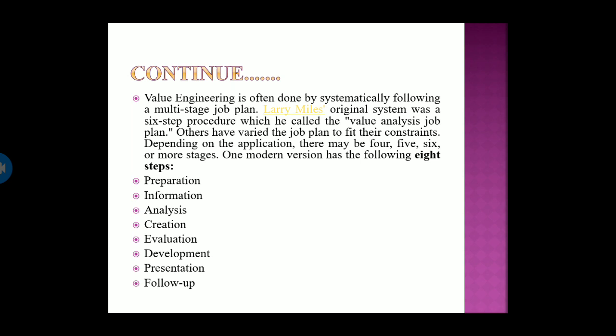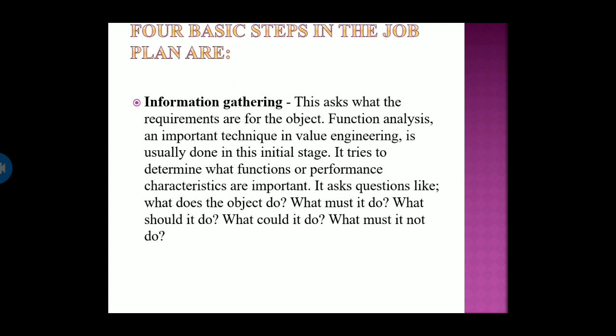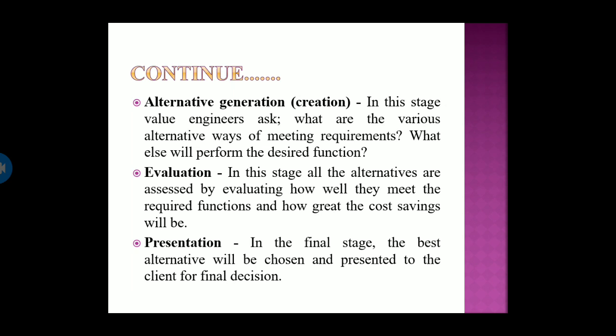The steps of value engineering are: preparation, information analysis, creation, evaluation, development, presentation, and follow-up. The information stage asks what the requirements for the object are — what does it do, what must it do, what should it do, what would it do, and what must it not do. In alternative generation, value engineers ask what the various alternative ways of meeting requirements are. In evaluation, all alternatives are assessed by evaluating how well they meet the required function. In the final presentation stage, the best alternative is chosen and presented to the client for a final decision.